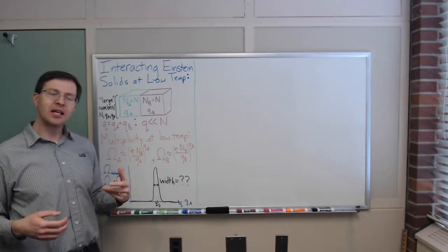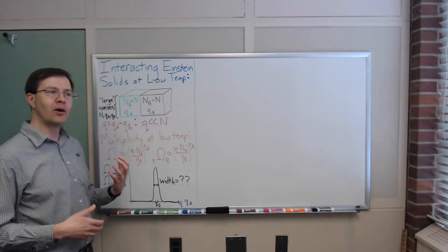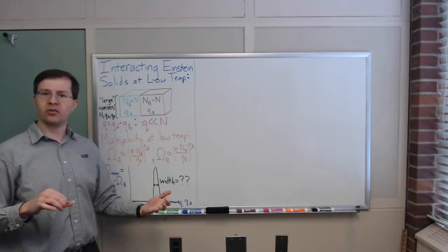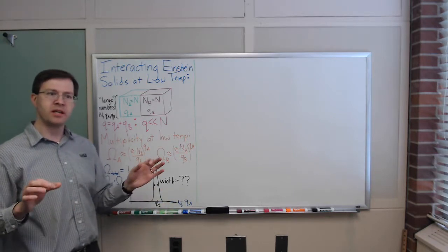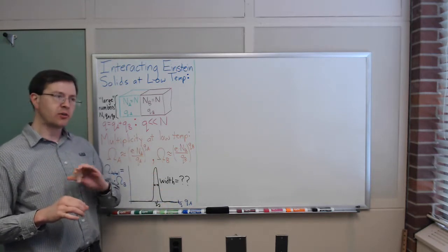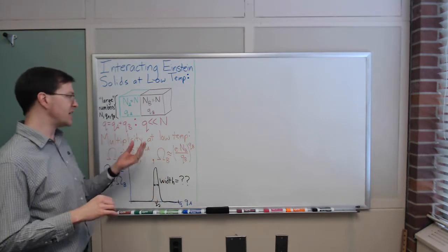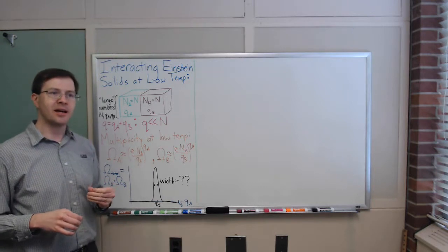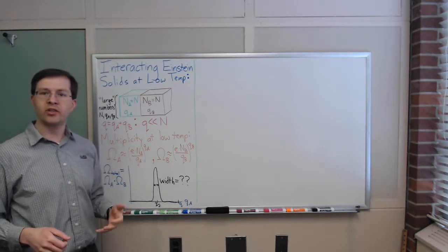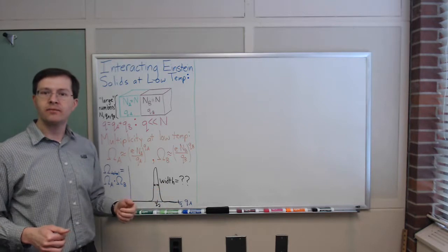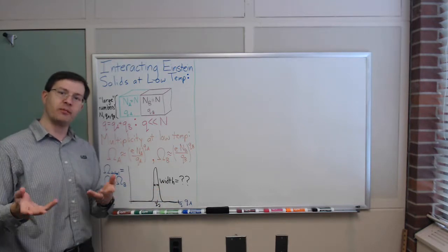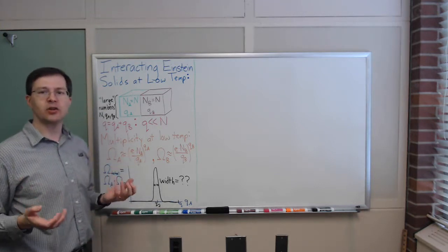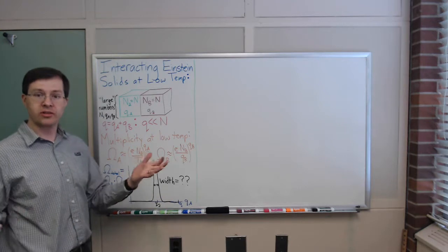In statistical mechanics, our goal is always to count states. I'm working in the micro-canonical ensemble — counting individual states with a specific known total energy. I'm using the notation and approach from Schroeder's thermal physics textbook, which I recommend. We've previously derived the number of microstates for each solid.